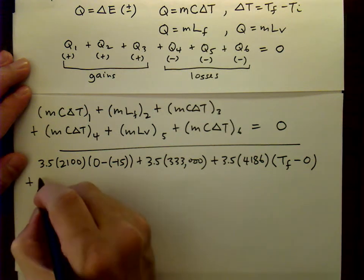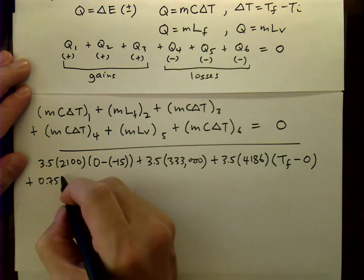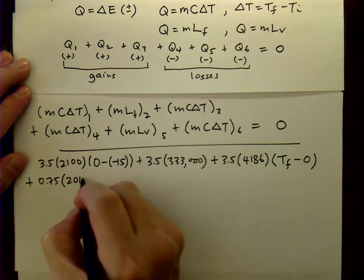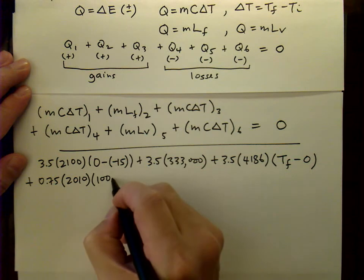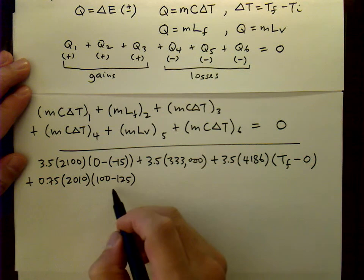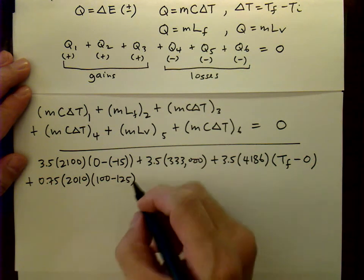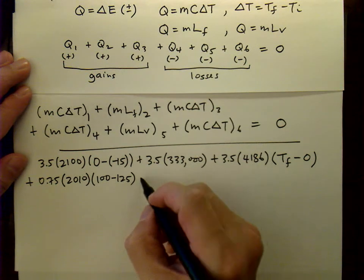And again, on the steam side, we have 0.75 kilograms times the heat capacity of steam, times the final temperature, which is 100 minus the initial temperature is 125. Remember, this MC delta T term is just for the steam dropping in temperature from a superheated form down to 100 degrees boiling point.